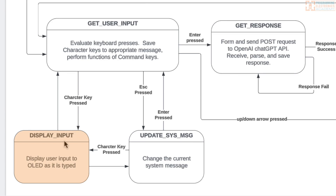In the 'display input' state, the system displays the user's input on the OLED. So every time a character key is pressed, you enter this state and the display is updated. If you type the letter J, a J shows up on the OLED. If you then type O, the O gets added — so you'd see 'JO.'